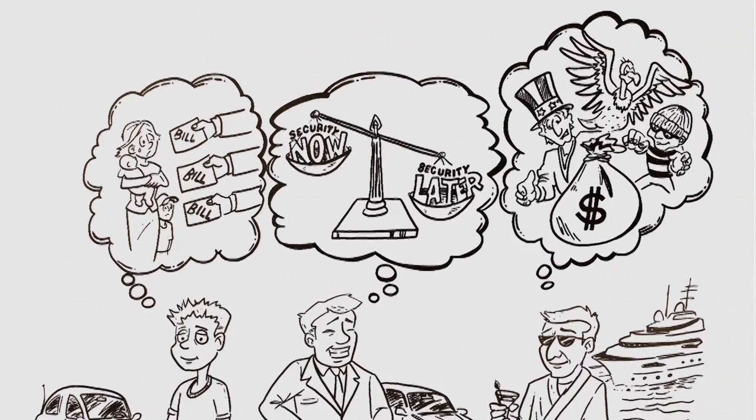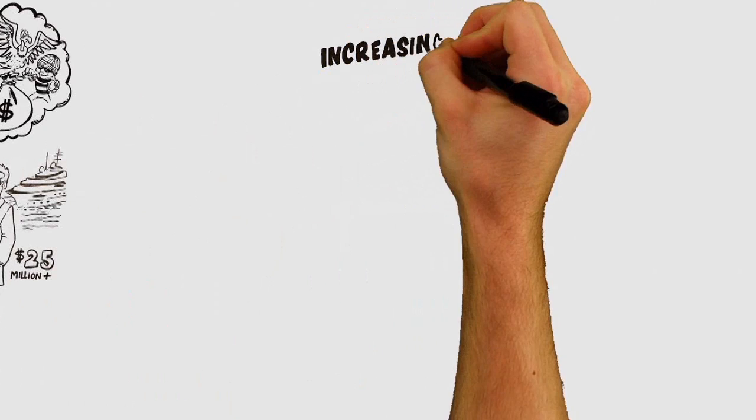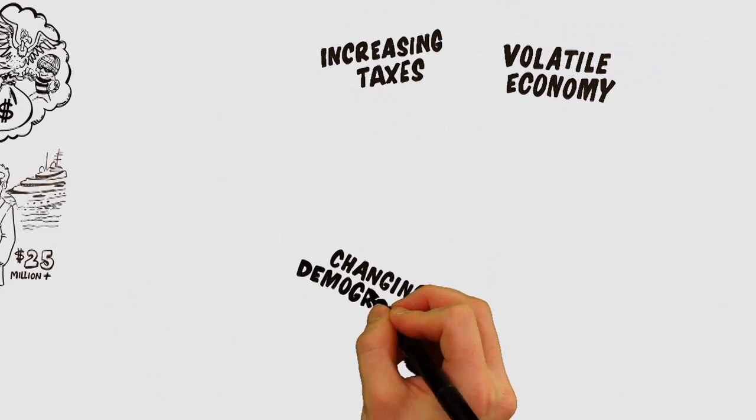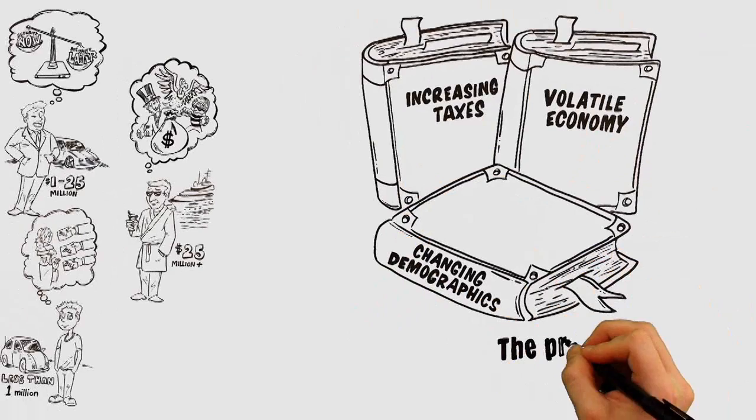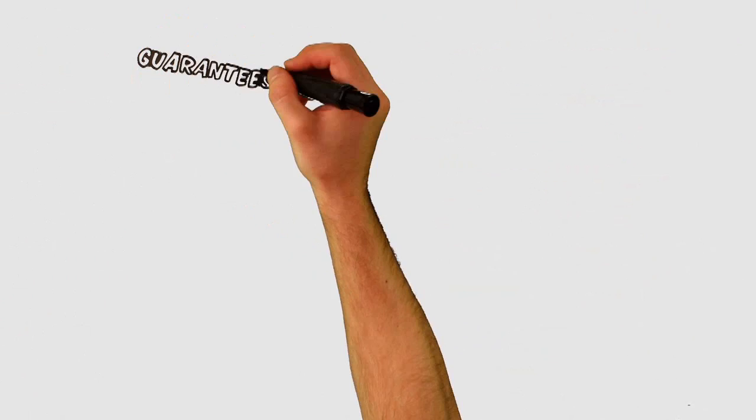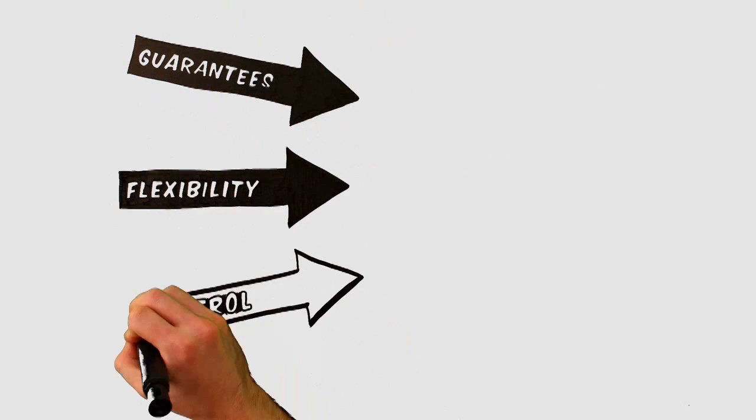For each of these three segments, there are three consumer trends that lend themselves to the creation of new stories: increasing taxes, the volatile economy, and changing demographics. We've got to understand the trends, and we've got to adapt our stories and our approach. The problems are obvious. The solutions lie in motivating consumers to act by offering them guarantees, flexibility, and control.